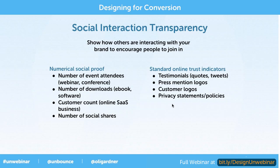Here are more examples of numerical social proof, which is the whole concept of the crowd — the bigger it gets, the bigger it gets, it just compounds itself. You can show the number of event attendees like on a webinar registration, or for a conference. You can show the number of downloads for an ebook or software to show that a lot of people have done it before. On a home page you can put a customer count, which is really common for online software-as-a-service businesses. And again, social shares like we talked about before.